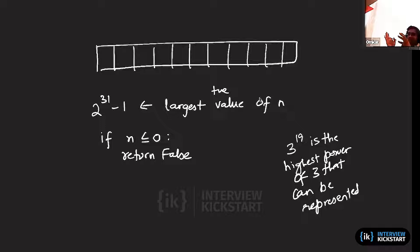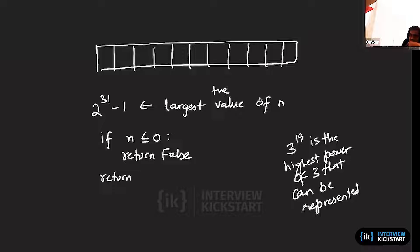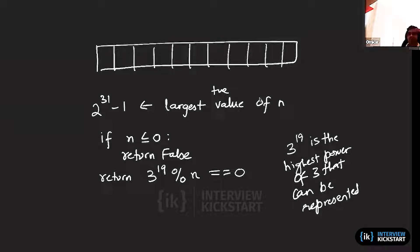3 to the power 19 is going to divide any power of 3 because it is the highest power of 3 that can be represented. So all you have to do is check if 3 to the power 19 exactly divides your number. Basically, assuming you have 3^19 calculated, you take the modulo of that with your number and check whether the remainder is 0. That tells you whether n is a power of 3 or not.